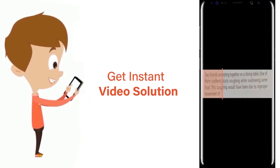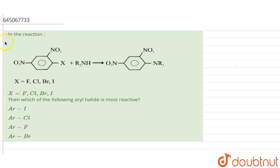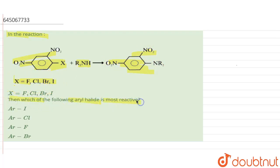In this question, there is a reaction where a molecule is being treated with R₂NH, giving a product where X is given as F, Cl, Br, I. The question asks: which of the following aryl halides is most reactive?